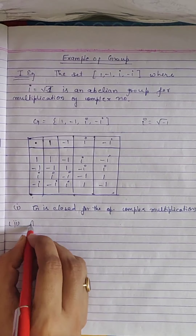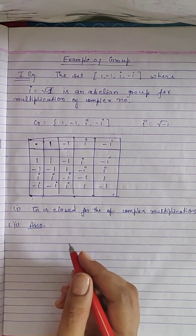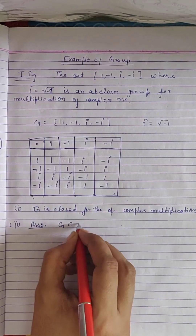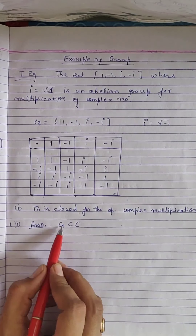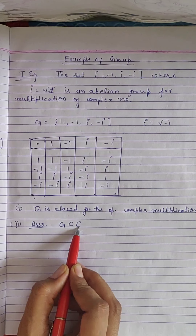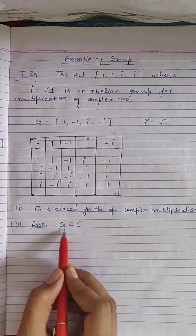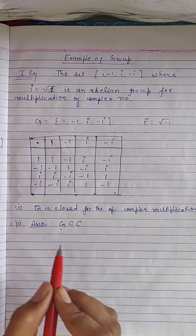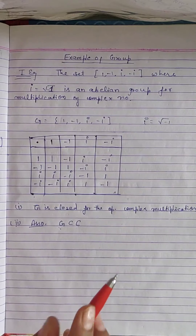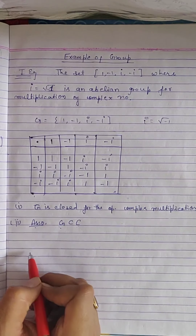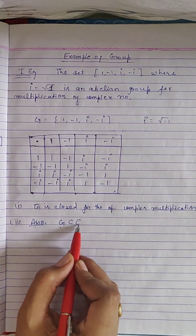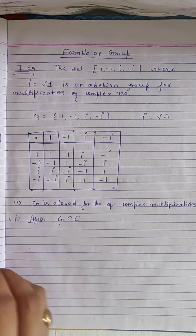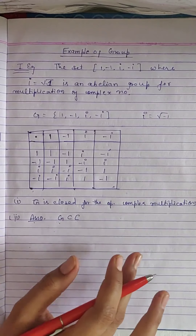The next property is associativity. Since G is a subset of the set of complex numbers, and associativity holds in the set of complex numbers, it is automatically satisfied in any subset. Also note that associativity and commutativity are two properties: if they hold in some set, they automatically hold in any subset. Therefore, associativity and commutativity for the multiplication of complex numbers are obvious.